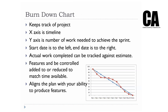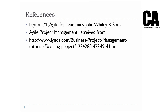Here's an example of a burndown chart. Along the x-axis you have the timeline; the y-axis is the amount of work needed to achieve the sprint. The start date is to the left, the end date to the right. With a burndown chart you can map actual work completed tracked against the estimate. Features can be controlled — you can add or reduce features to maintain your timeline. If you're drifting, start removing features or simplifying what you're doing. I highly recommend doing a burndown chart for the overall project and separate ones for each sprint.